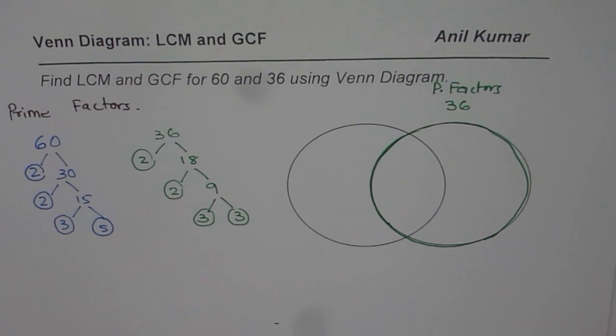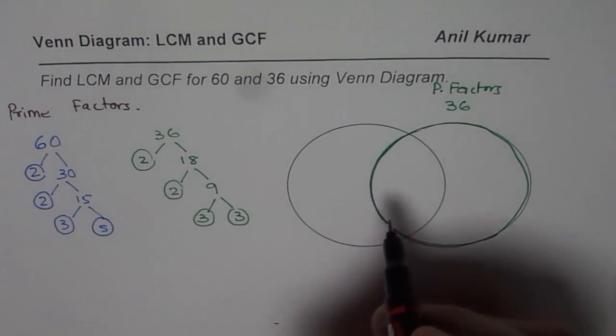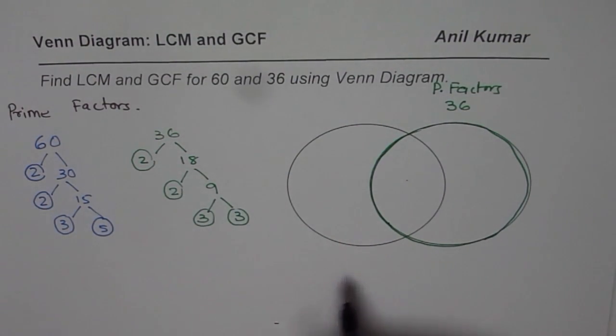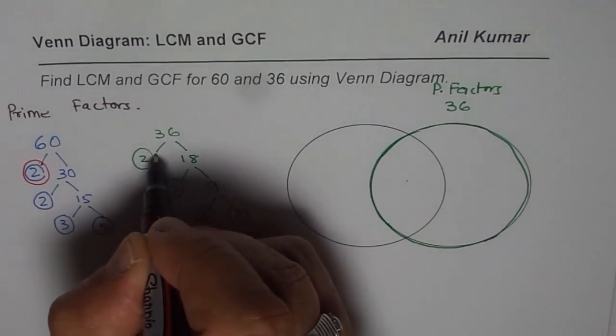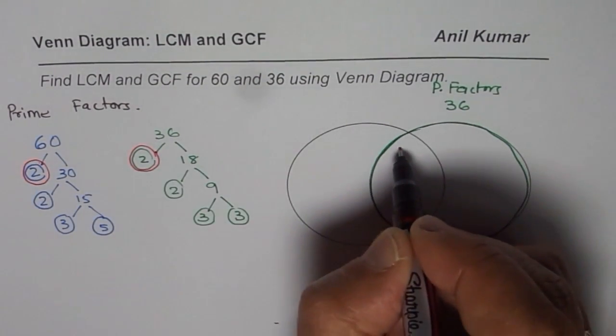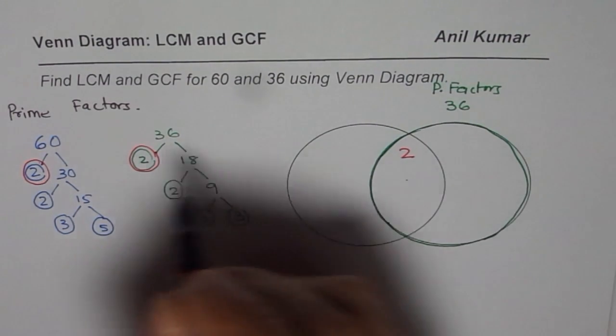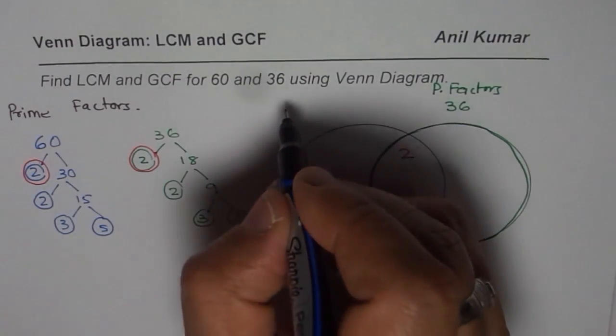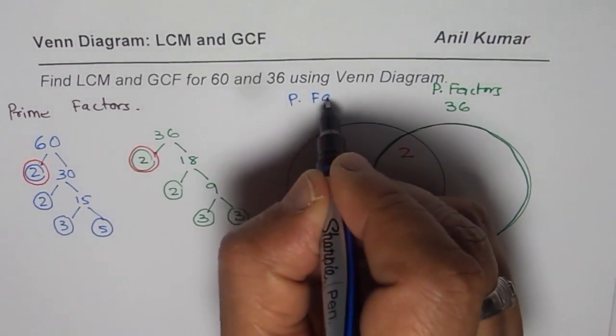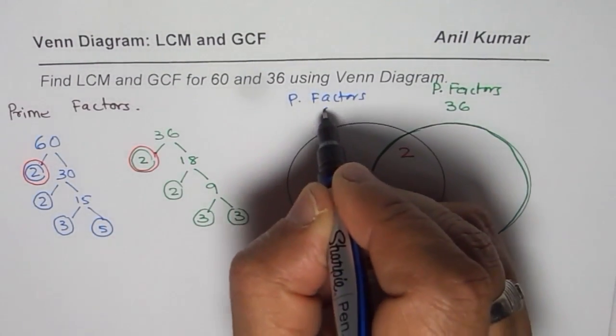Now the idea here is whichever are common, they come in the center. So what are common? So we have 2 as common, 1, 2. That goes in the center. Common between 36 and 60. Let me also write here that on this side we are writing prime factors of 60.